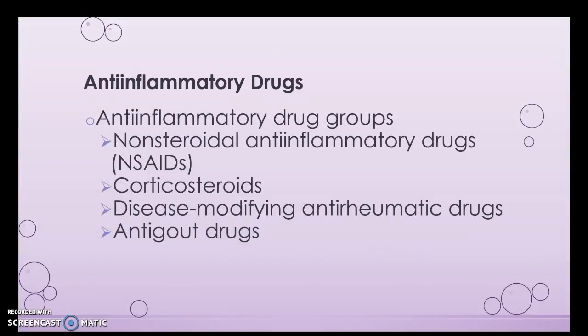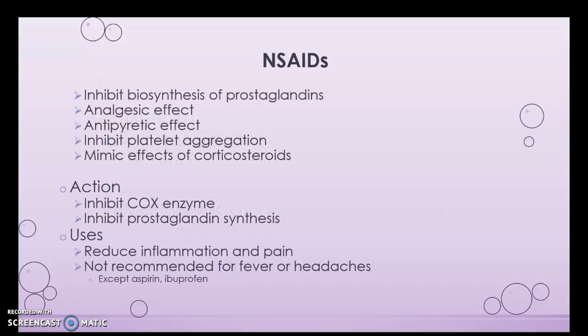We're going to look at non-steroidal anti-inflammatory drugs and also COX-2 inhibitors. I've listed other drugs in here as well. I'll tell you which ones you'll definitely need drug cards for and which ones you may not need as soon as others. These NSAIDs are going to produce an analgesic effect — pain relief — an antipyretic effect, which is lowering a fever, and they can inhibit platelet aggregation. Their action is to inhibit the COX enzymes, and since they're not specific, they inhibit both.